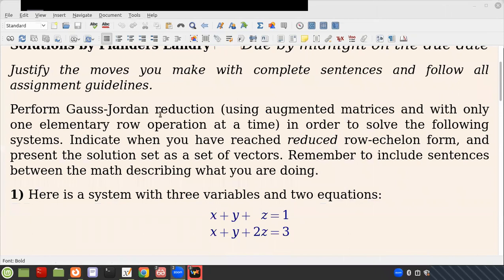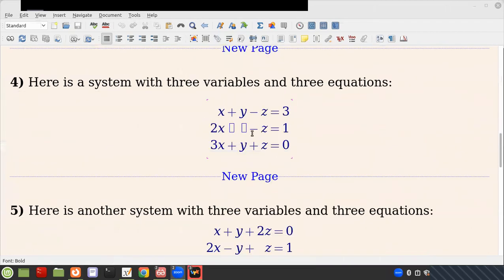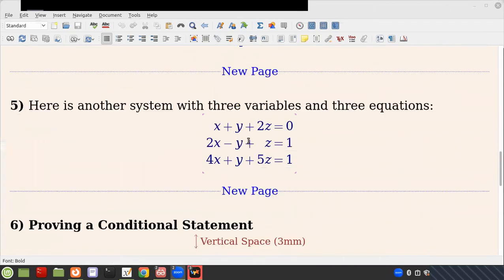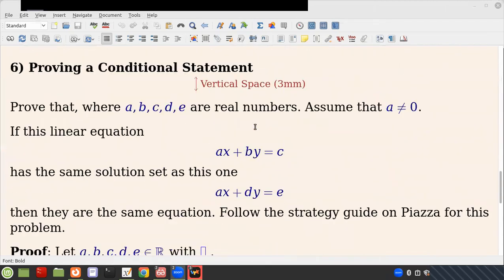So the first one is you're doing Gauss-Jordan reduction using augmented matrices, and you have, so you just have linear systems here, right? You just have a bunch of linear systems for the first five. So the first five problems are relatively straightforward, you know, Gauss-Jordan method stuff.